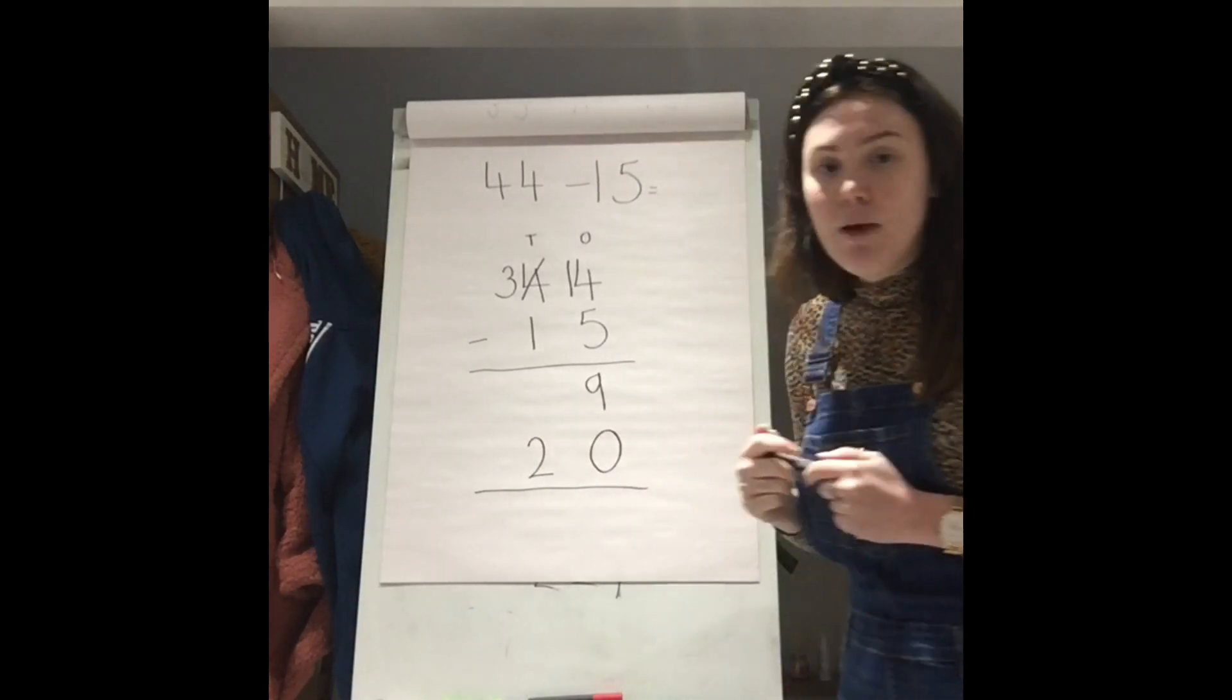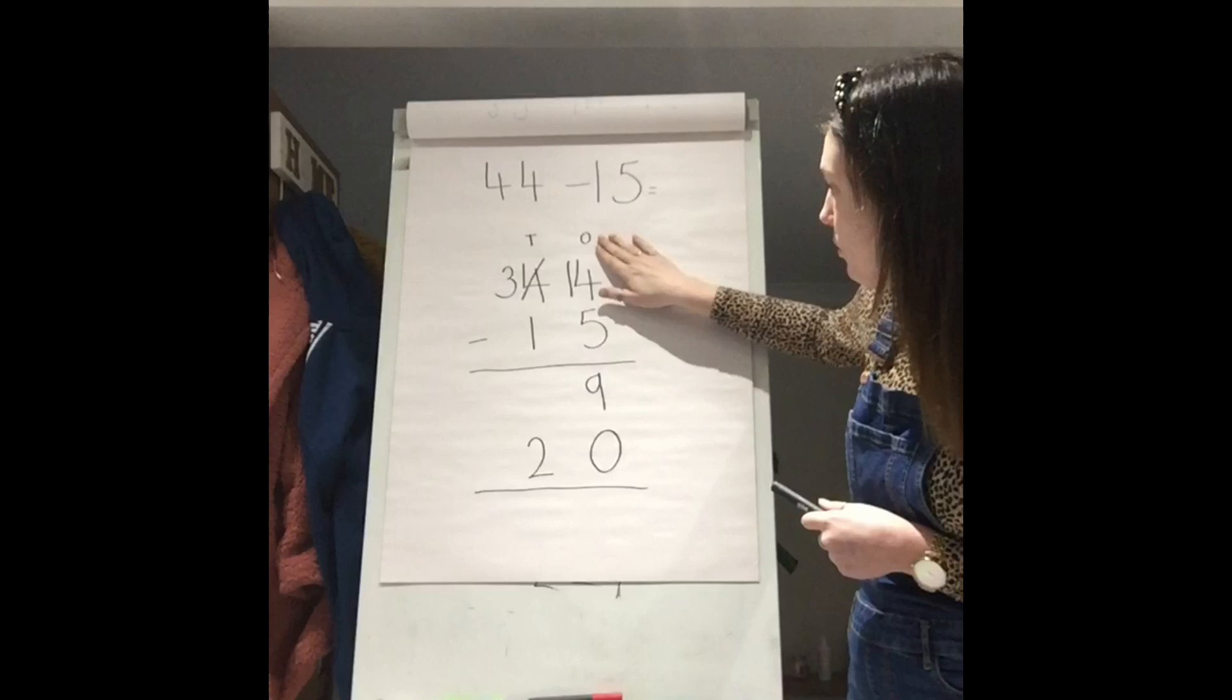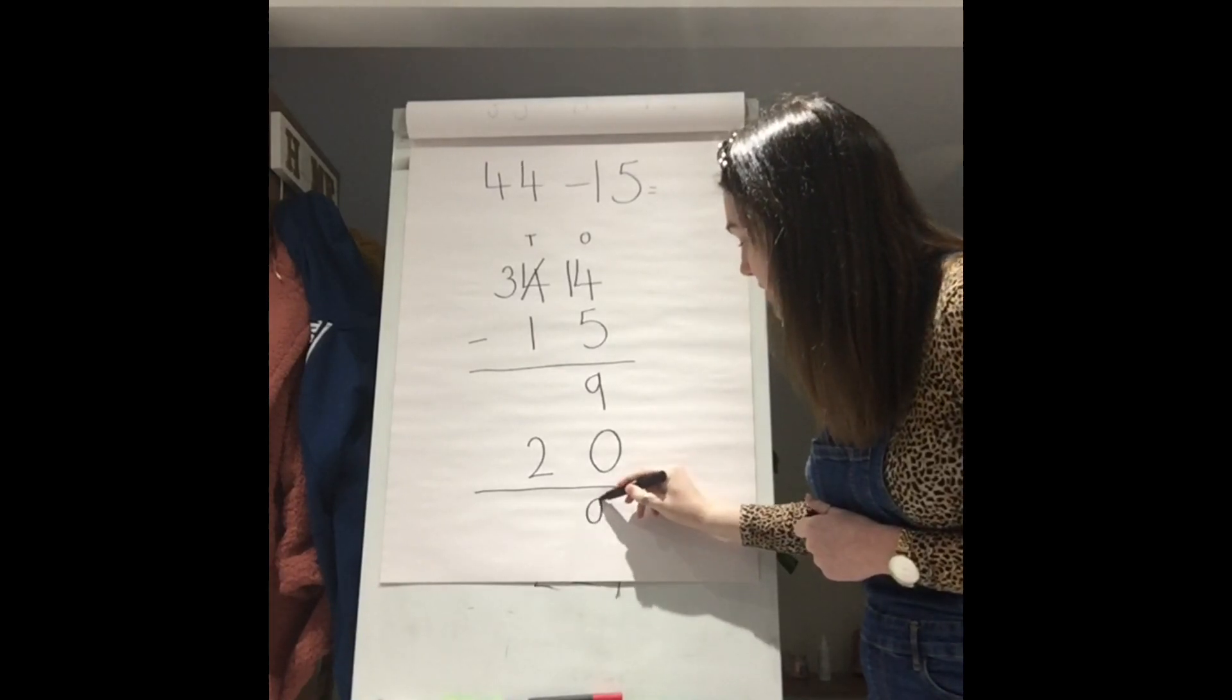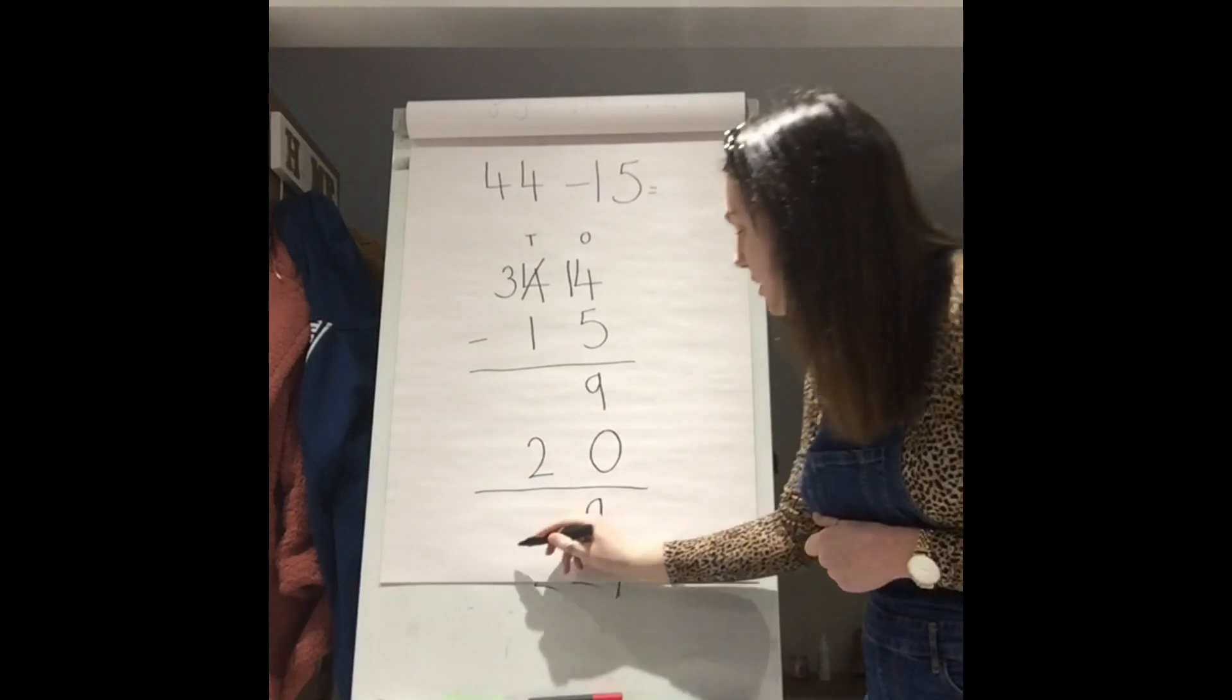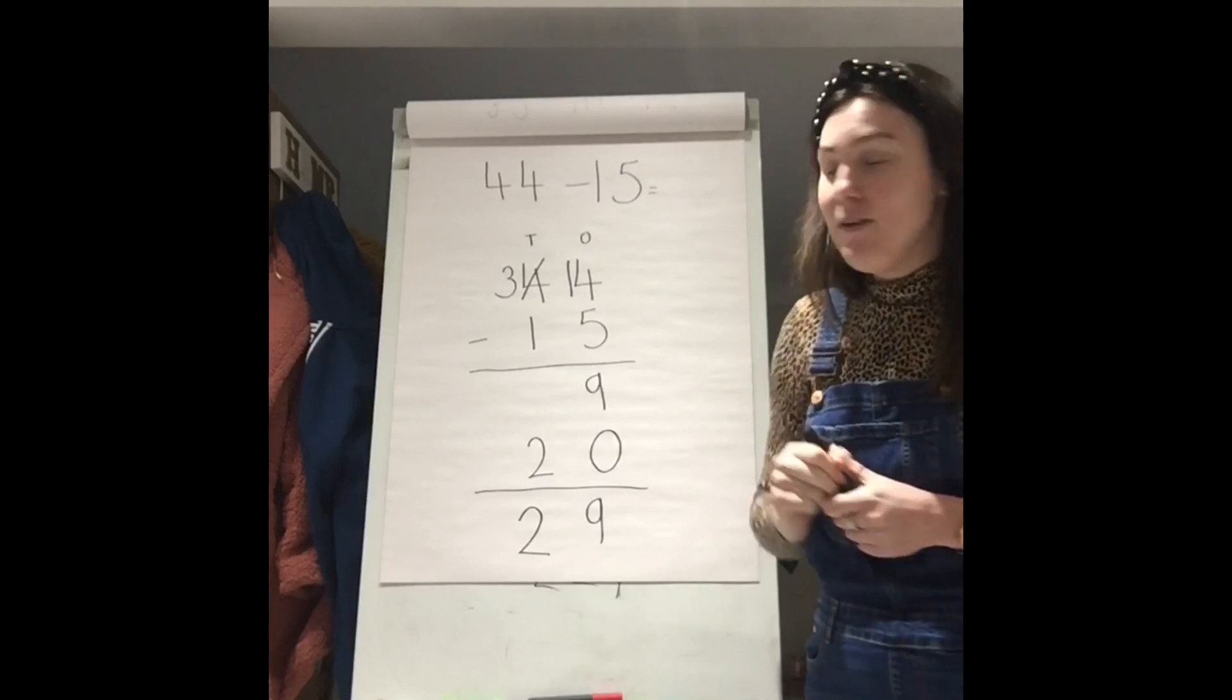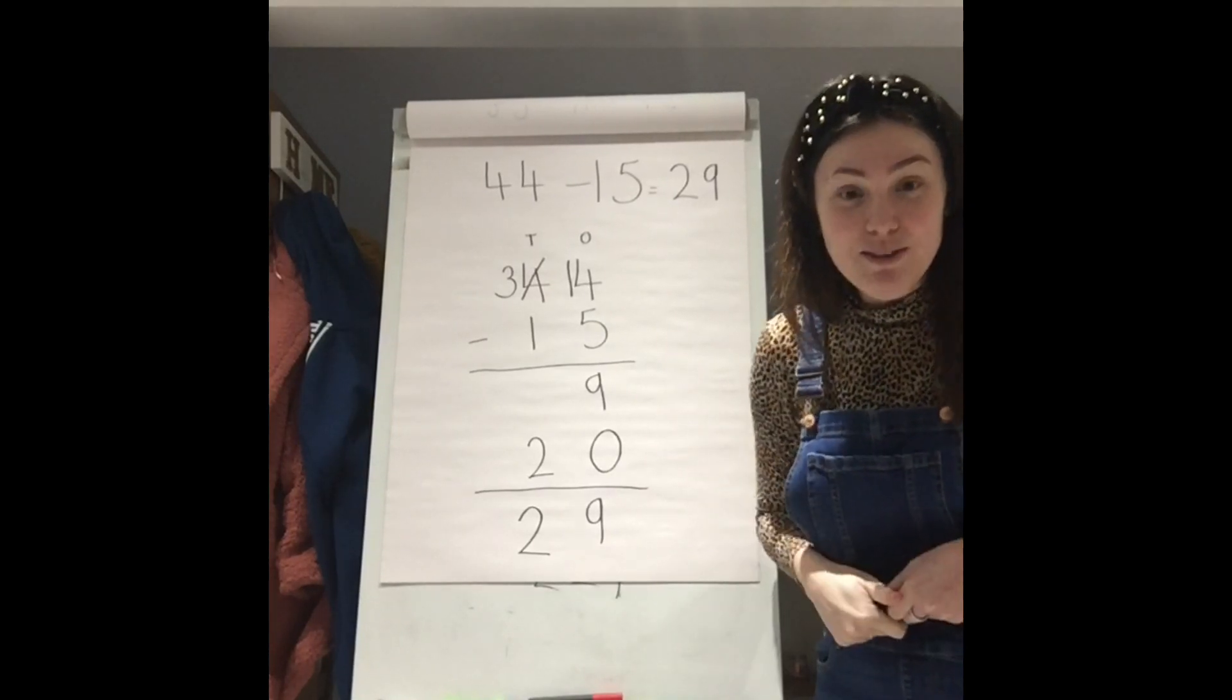And same as our last example, even though it's a subtraction, we still have to add the total of our 1s column and our 10s column together. So, 9 and nothing is 9. 9 and 0 is 9. And this is our 20 here in our 10s column. Our answer to 44 take away 15 is 29. Fantastic. Well done, you.